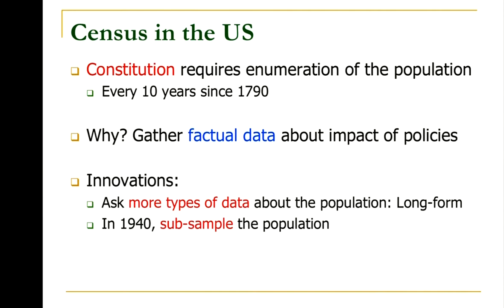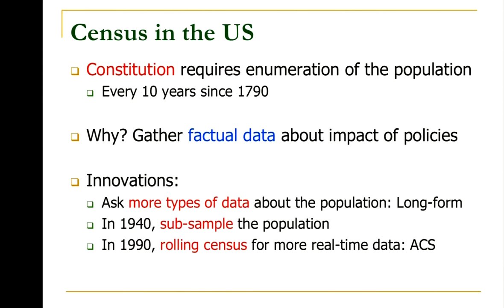Since the 1940s, people started realizing it's really not necessary to enumerate every single person in the population for all features. You could use sampling techniques and subsample a random population to learn something about the census. Starting in the 1990s, they began doing something called rolling census. Rather than waiting for the next 10-year cycle, you subsample part of the population every month, giving you rolling data at the monthly level. This is called the American Community Survey, or ACS.